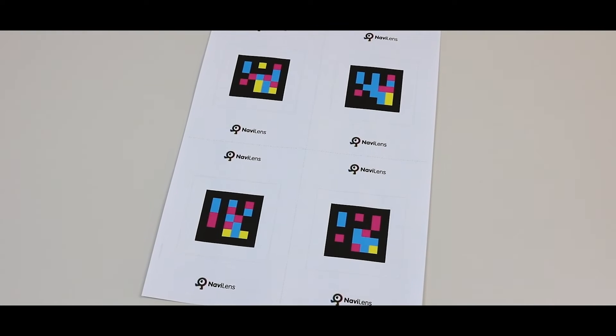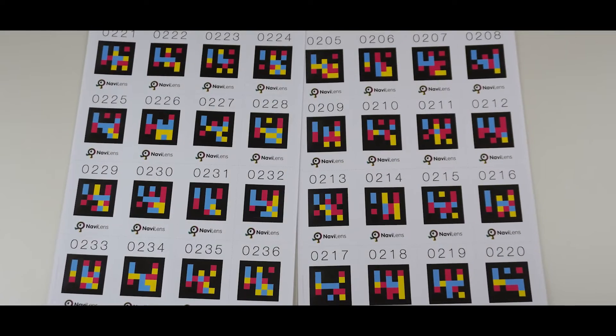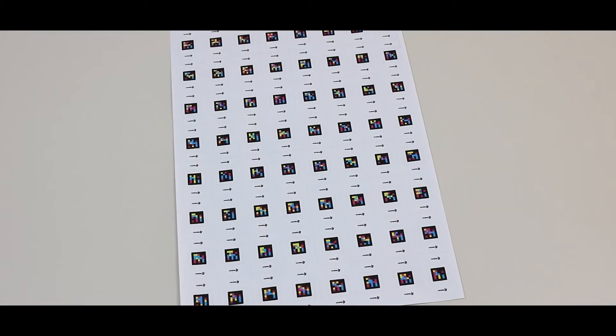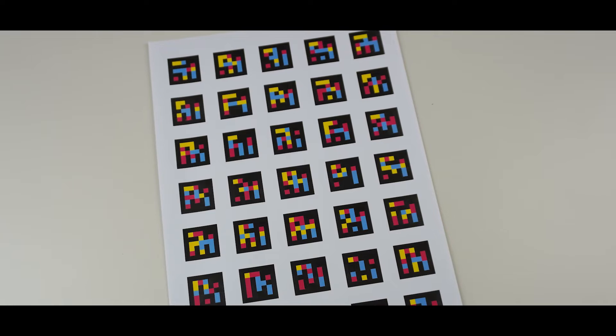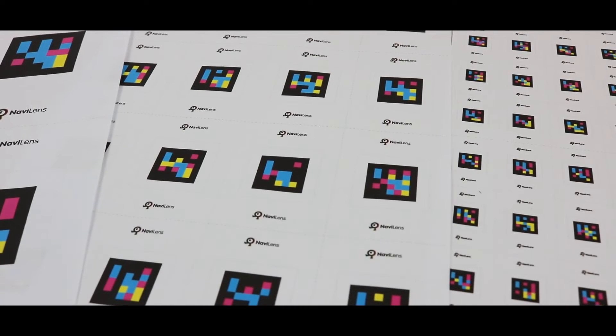The second PDF has four large codes measuring 95 millimeters squared. The third and fourth both have 16 medium-sized codes measuring 47 millimeters squared. The fifth has 64 small codes measuring 23 millimeters squared. And the last PDF has 35 special codes which need to be printed on a specific type of adhesive paper. Please find more information in the description of this video.